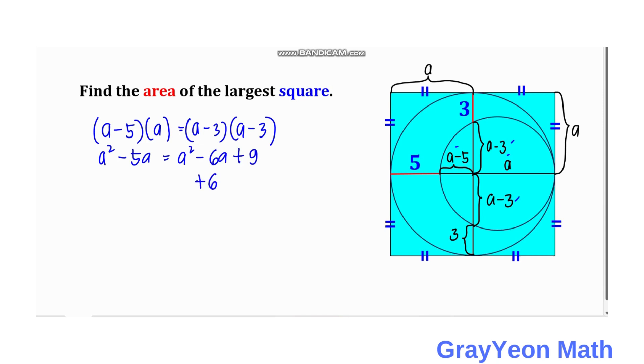add 6a, and add 6a here, plus 6a. And we cancel this a squared, and we cancel this also. We have a is equal to 9.